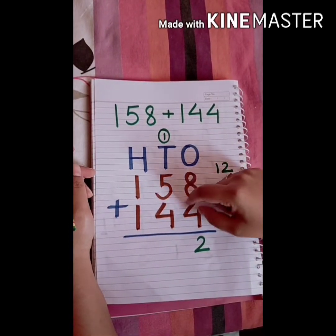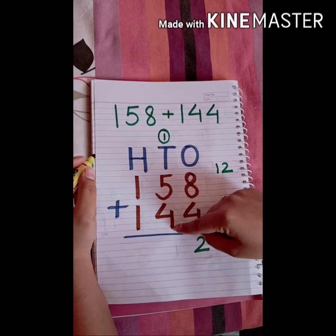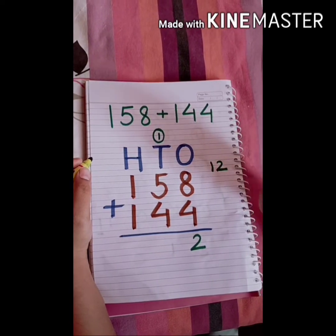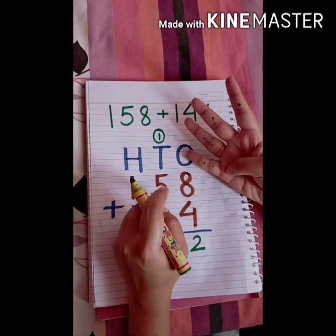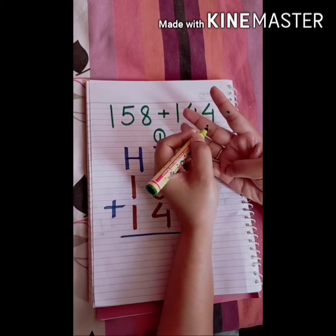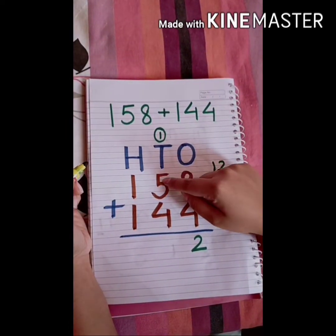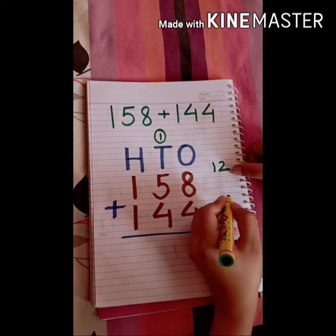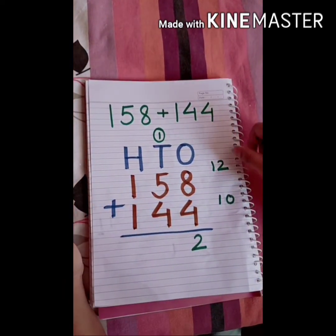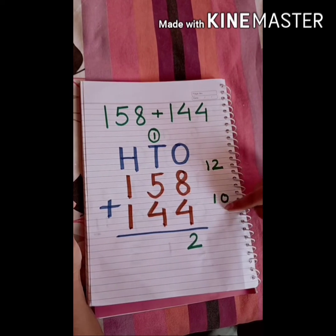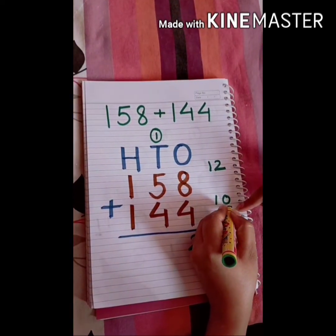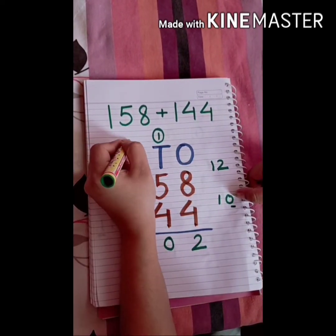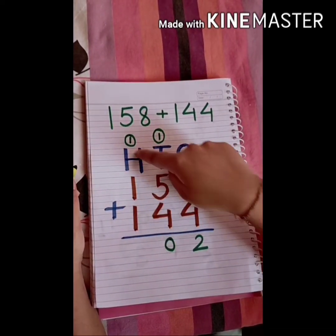We write the rightmost digit 2 below and carry 1 forward to the tens column. Now add the tens digits: 5 plus 4. We keep 5 in mind and count — six, seven, eight, nine. So 5 plus 4 equals 9, but we have a carry of 1, so 9 plus 1 equals 10. Again the sum is more than 9, so we write 0 below and carry 1 to the hundreds column.